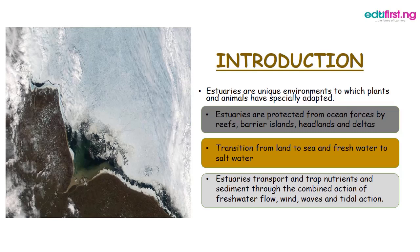Let's go over to our introduction. Estuaries are unique environments to which plants and animals have specially adapted. Estuaries are protected from ocean waves by reefs, barrier islands, headlands, and deltas. There is a transition from land to sea and freshwater to saltwater.